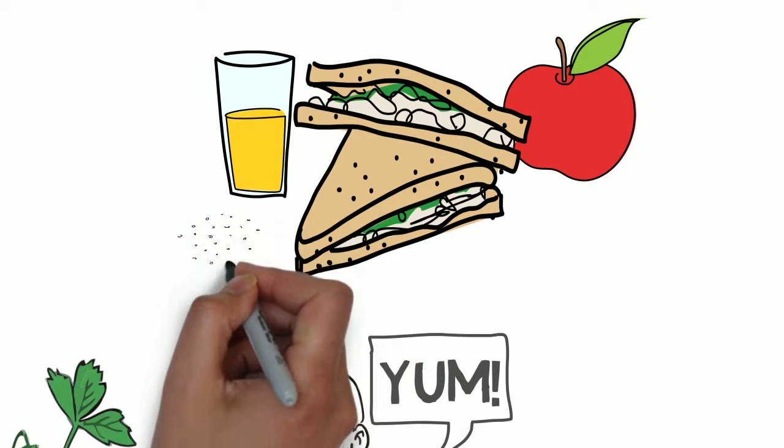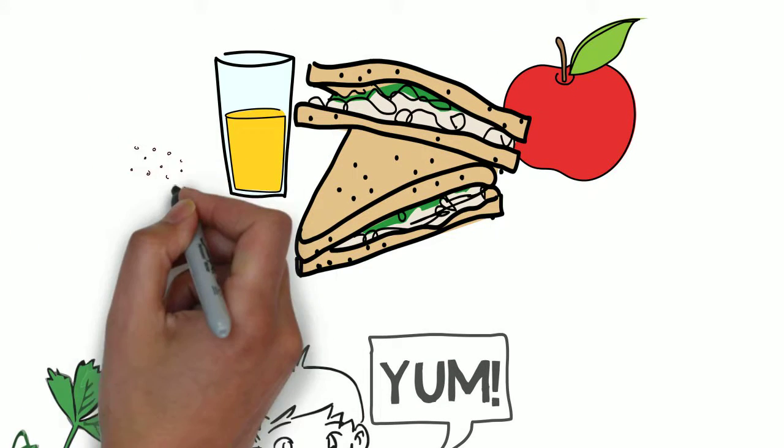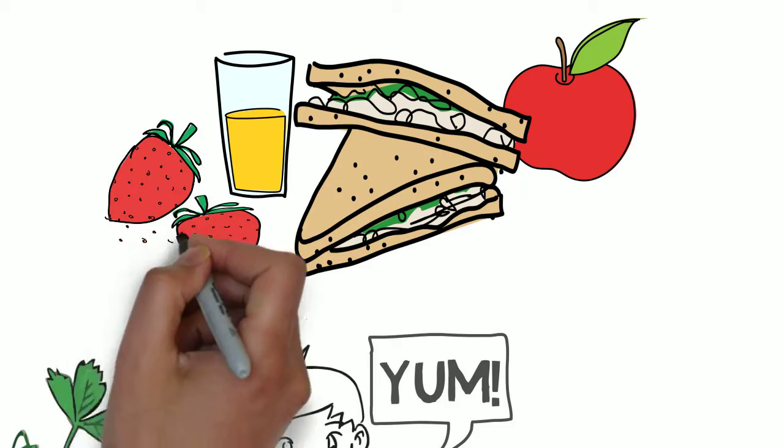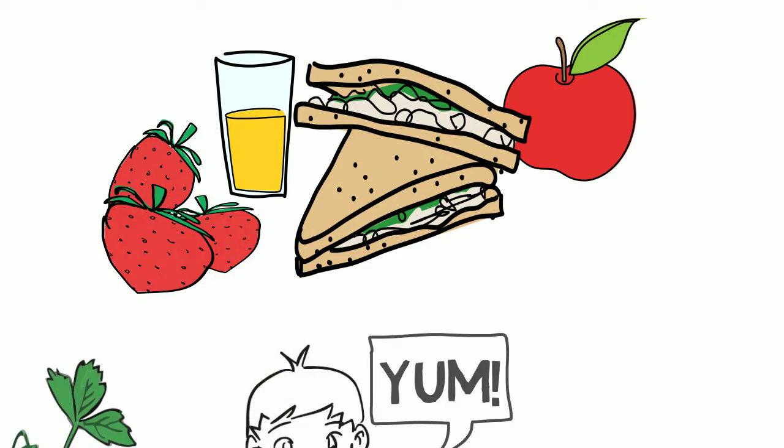So now you know, the food in your lunchbox started as gas and rocks and is made into food by plants.